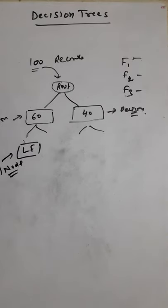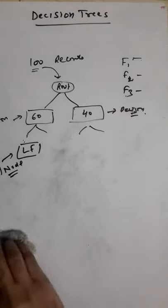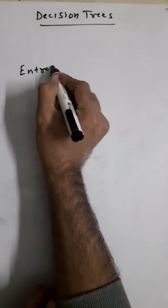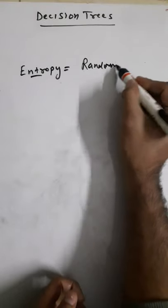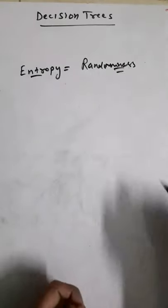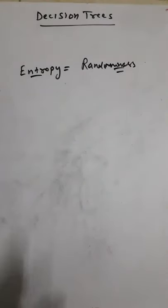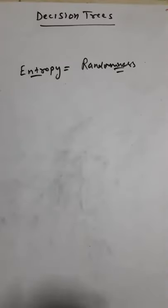Those are the terminologies about decision trees. Before creating a decision tree we need to understand a few other terms. The first one is entropy. Entropy is basically randomness — it is the uncertainty or measure of disorder in our dataset.